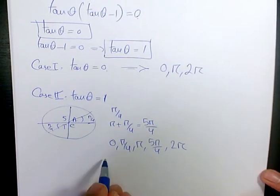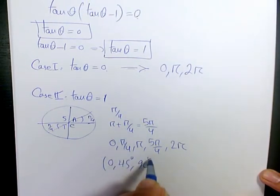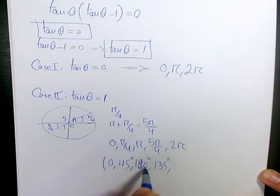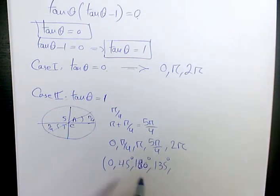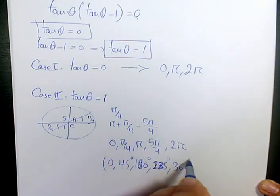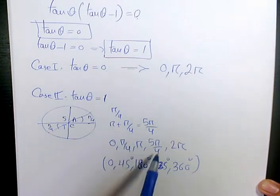If you want to write in terms of degrees, it's going to be zero, forty-five degrees, one hundred eighty degrees, two hundred twenty-five degrees, and three sixty degrees. So these are the five answers to this question.